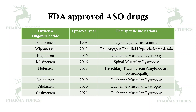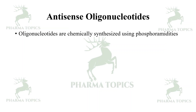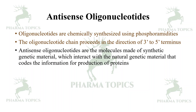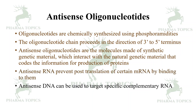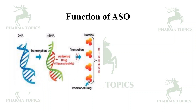Antisense oligonucleotides are chemically synthesized using phosphoramidites; the oligonucleotide chain proceeds in the 3' to 5' direction. They are molecules made of synthetic genetic material that interact with natural genetic material coding for protein production. Antisense RNA prevents translation of certain mRNA by binding to them, and antisense DNA can be used to target specific complementary RNA.